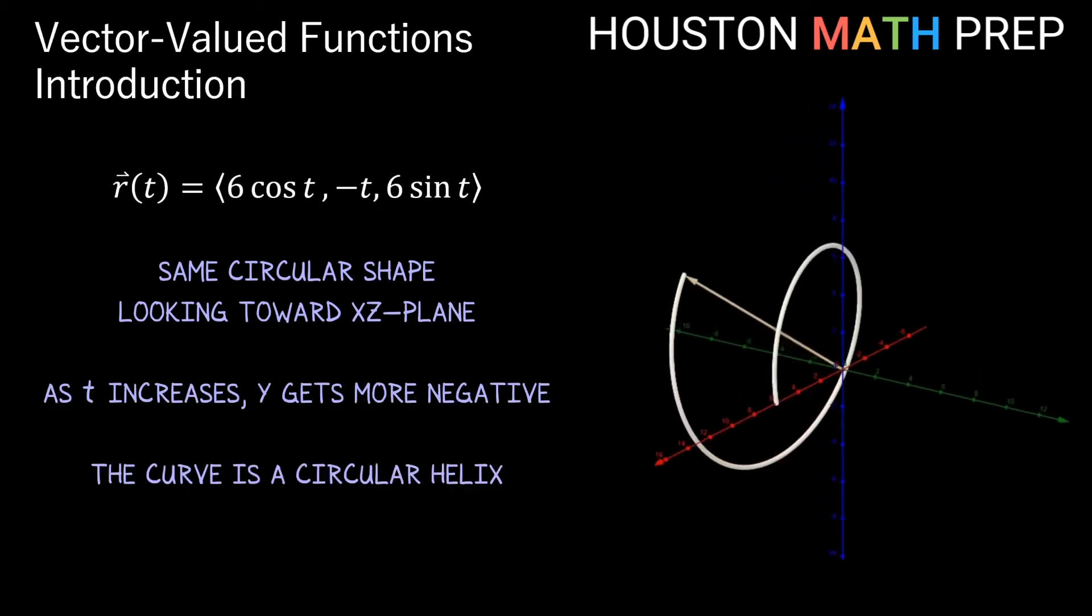So we get a helix here again, this time the helix is circular due to the same coefficients on the x and z components, both are 6, and this time our helix is coiling in the negative y direction.